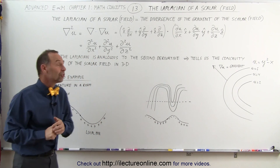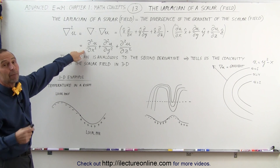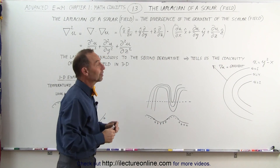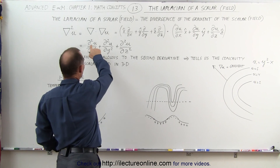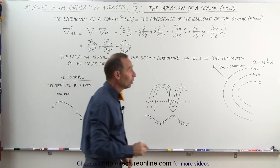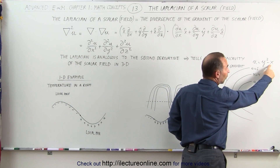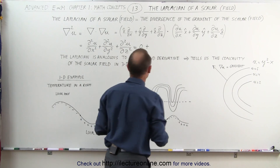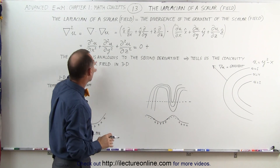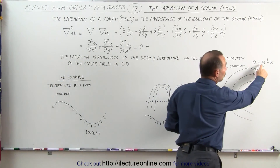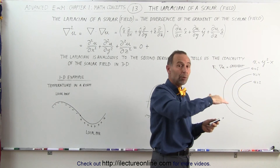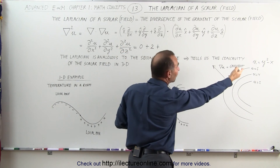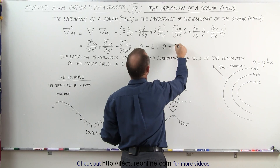The Laplacian is actually fairly easy to calculate — it's simply the partial second derivatives of a scalar function. Taking the scalar function u = y² - x, let's find the Laplacian. The second partial derivative with respect to x: the first derivative gives negative one, and the second derivative of a constant is zero. The second partial with respect to y: the first derivative gives 2y, and the second derivative of 2y is 2. There's no z variable, so that term is also zero. The Laplacian is therefore 2, a positive value.